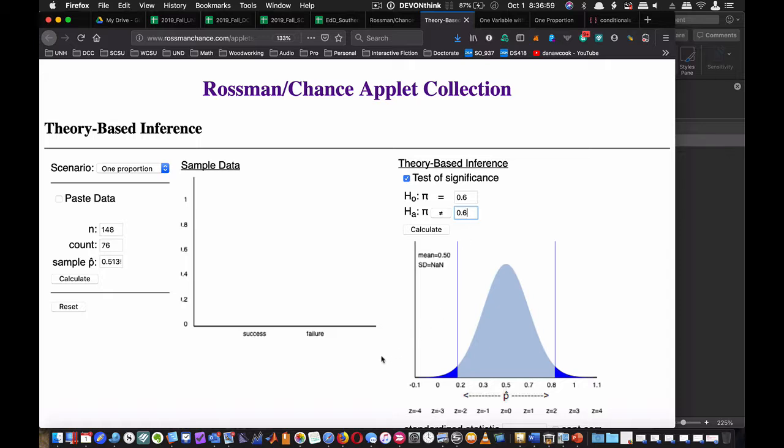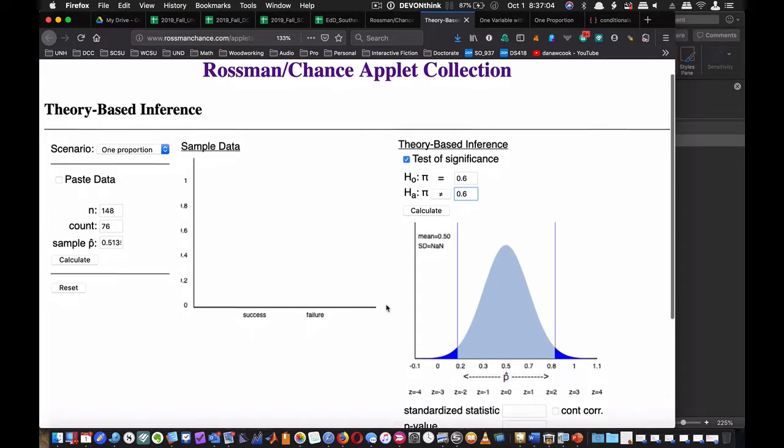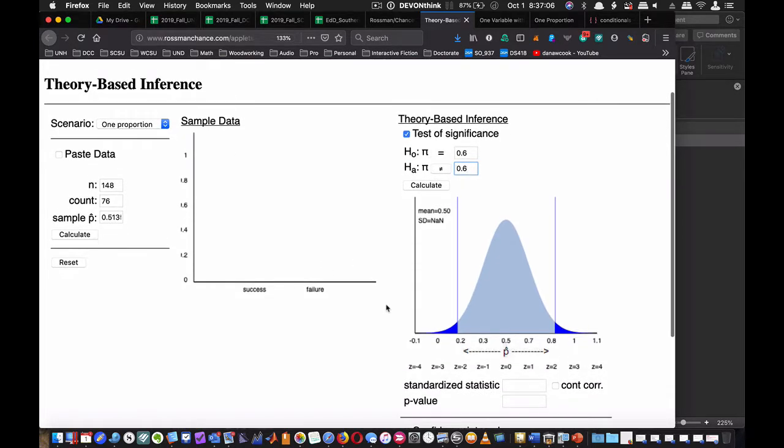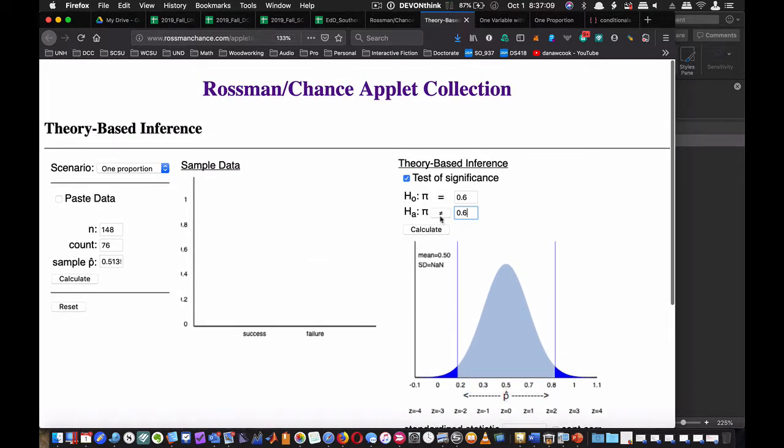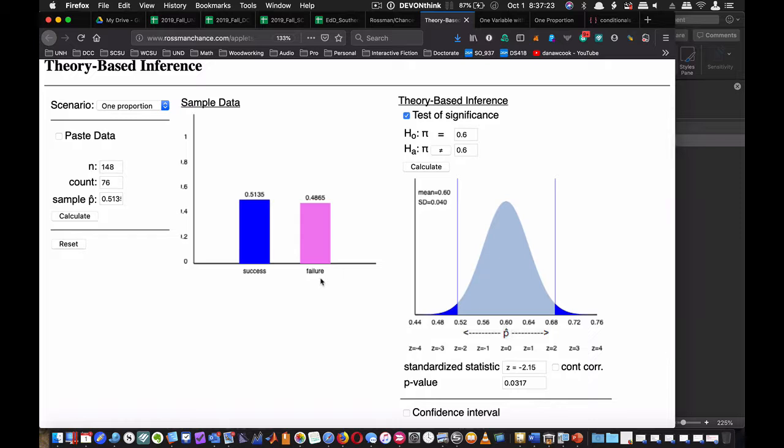Why two-tailed? Because of the 'not equal' sign—we're just trying to determine if it's 0.6 or not 0.6. She's right or wrong. Hit calculate and we get p̂ = 0.513. The rest represents failures. We had 76 successes and more than 10 failures, which means we can do this theory-based analysis.